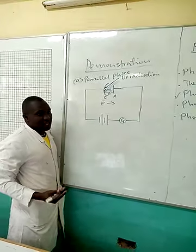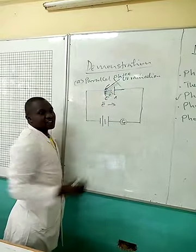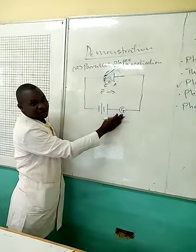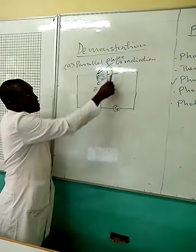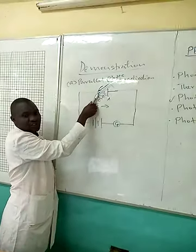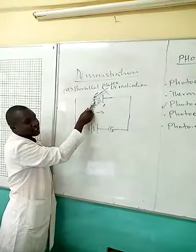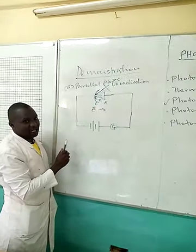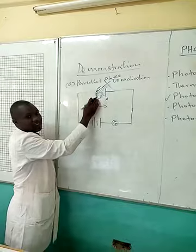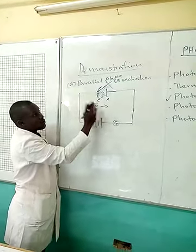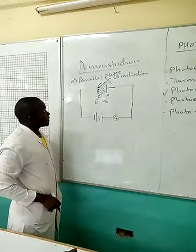When a glass material is placed on the path of the UV radiation, there will be no deflection on the galvanometer. This is because the UV radiation is not able to reach the cathode and therefore cannot emit electrons to be attracted by the anode. So any barrier placed between the source and the cathode will cause no deflection on the galvanometer.